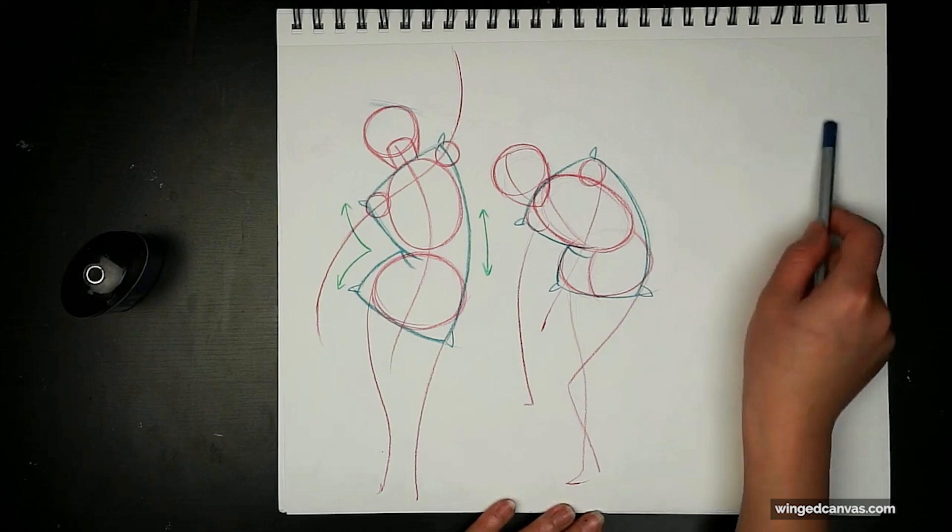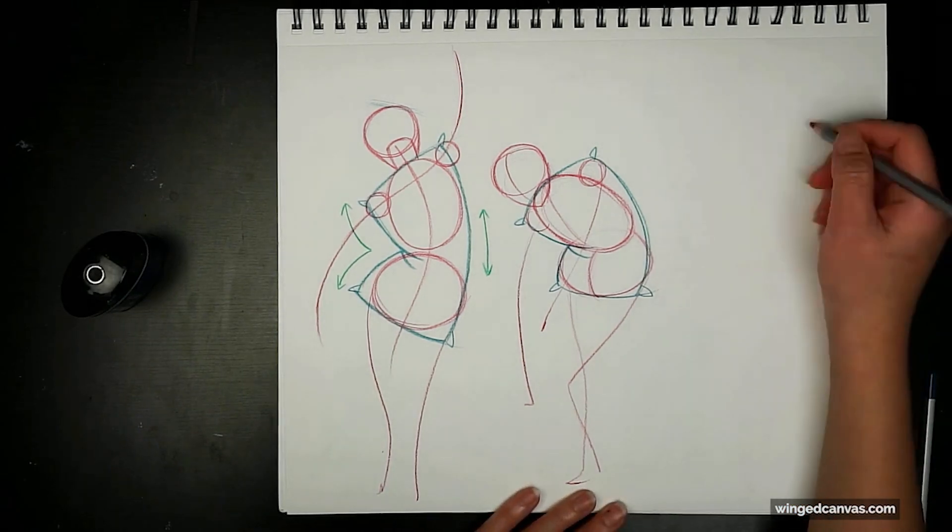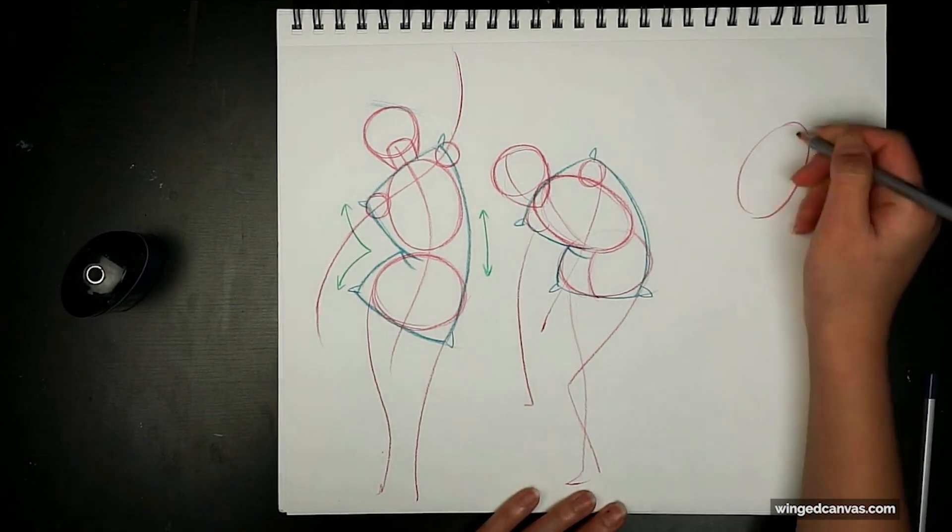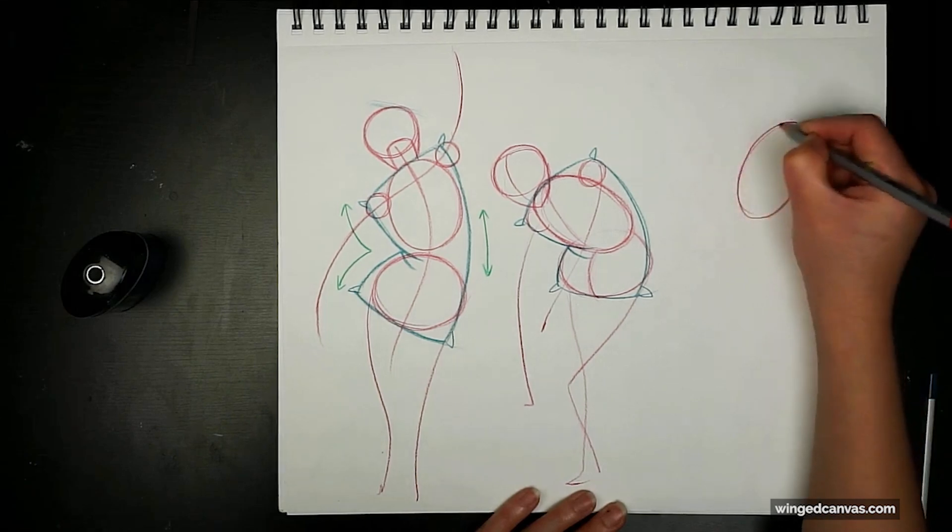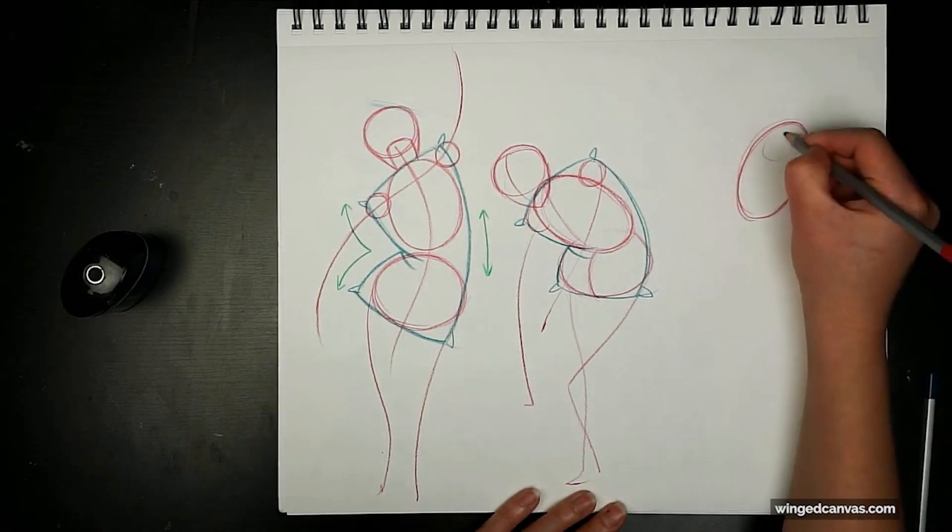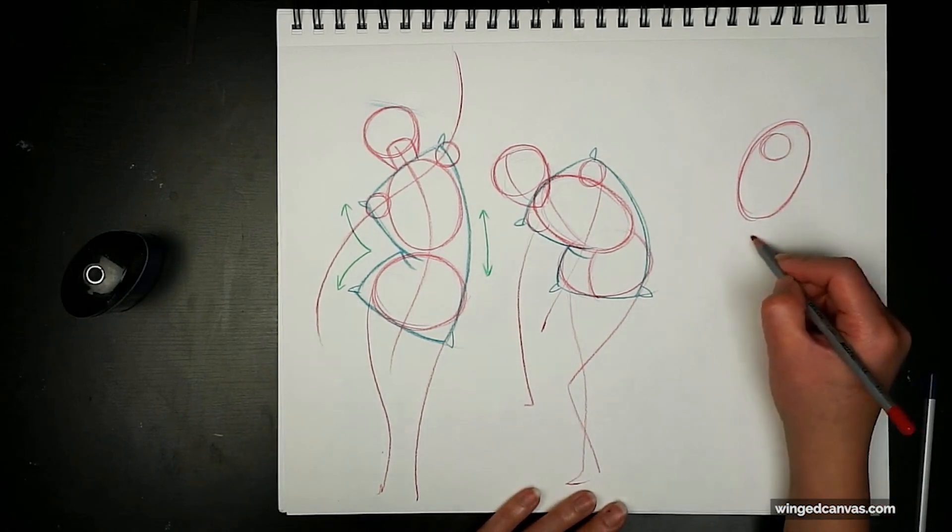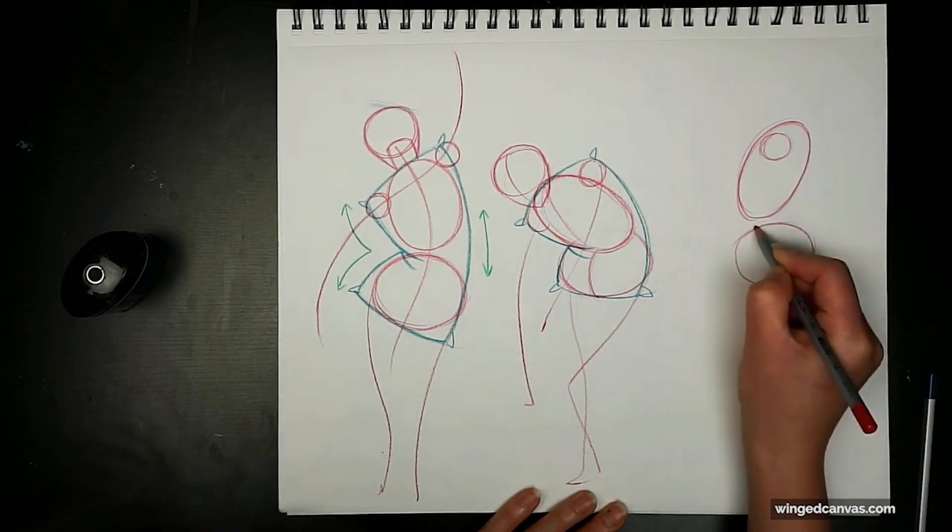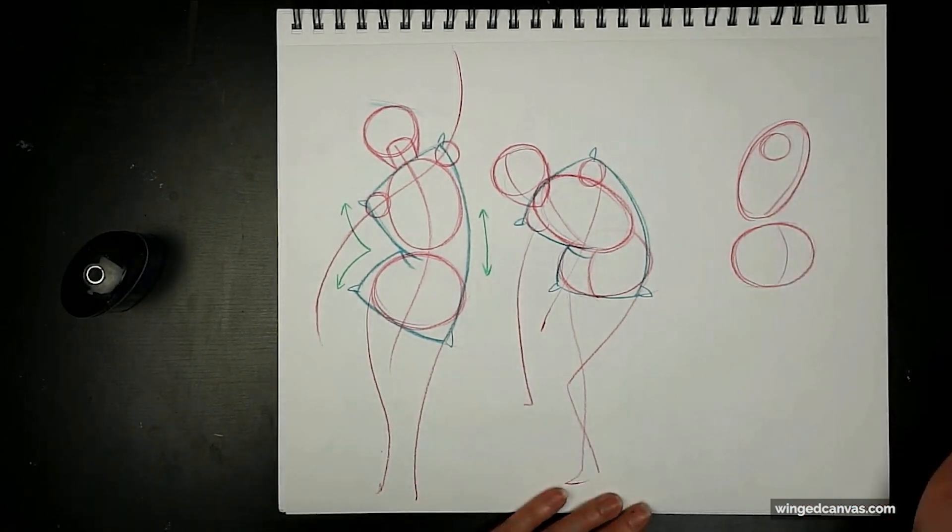The last one we can do a pose going the opposite way. Let's do a bit of a twist here. So here I'm drawing a rib cage that is skinnier because this rib cage is from the side. You can see the arm is like that, and let's have it twisting the opposite way.